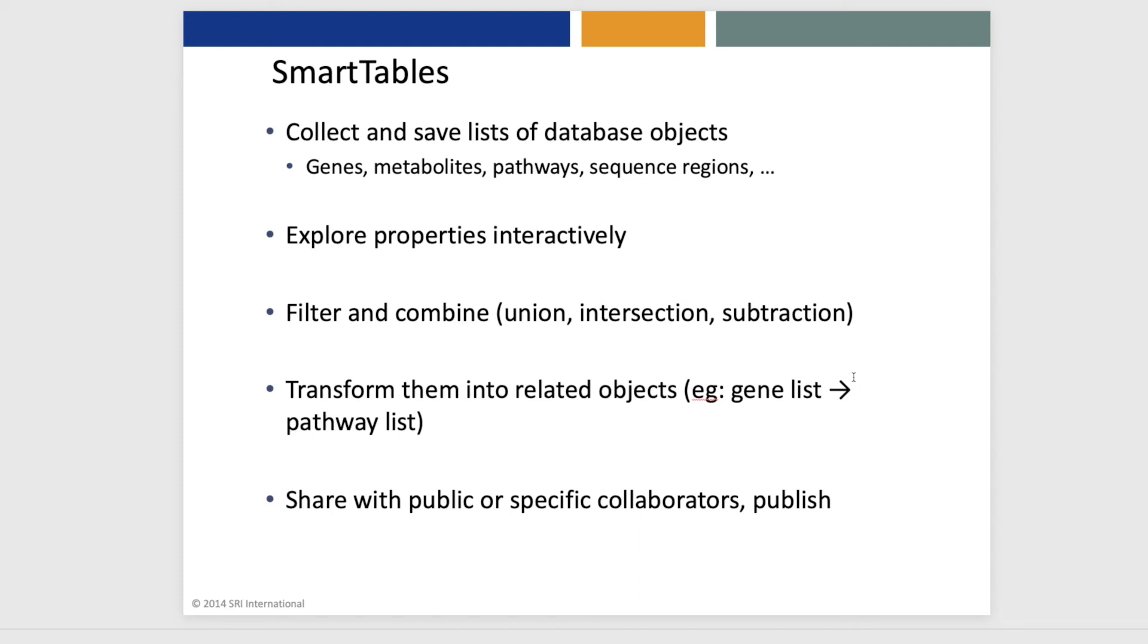Another tool within BioCyc is called Smart Tables, which allows the user to collect and save lists of database objects, such as lists of genes, metabolites, or pathways, or sequence regions. The user can explore properties of that set interactively, filter and combine these sets, such as by taking an intersection of two sets,